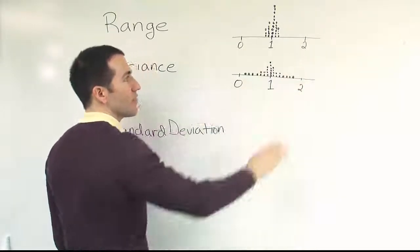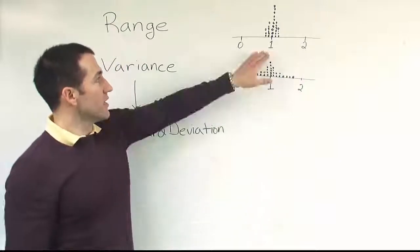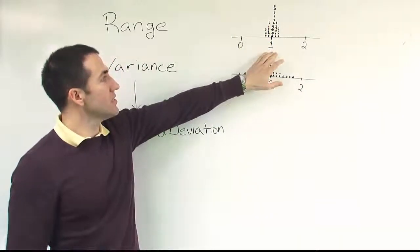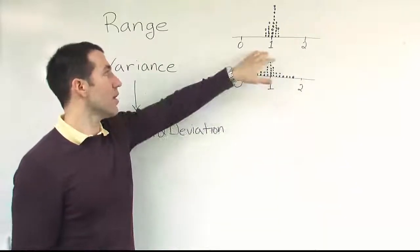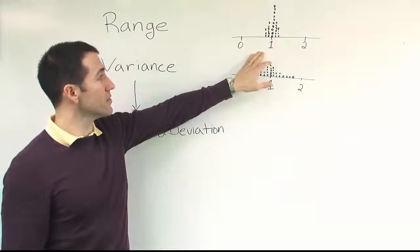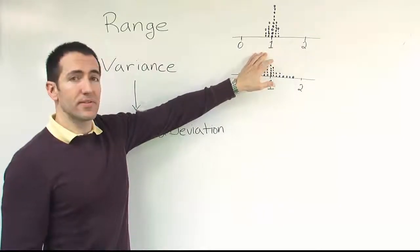And generally, we find that throughout science is that a data set that's more homogeneous, more clustered around its center, is going to be easier to make predictions about. It's a mark of quality when it comes to manufacturing. And in the world of science and research, it's helpful because it allows us to make statements.